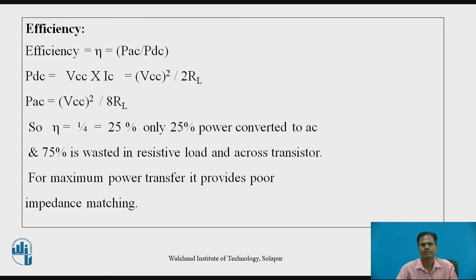Let us find out the efficiency for the series-fed class A power amplifier — that is, the ability of the power amplifier to convert DC power provided in the collector circuit to output AC power delivered to the output load. Efficiency is given by η = PAC / PDC, where PAC is the AC power delivered to the load and PDC is the DC power delivered in the collector circuit. PDC = VCC × IC. The efficiency of the series-fed class A amplifier, η, equals 1/4, that is 25 percent.